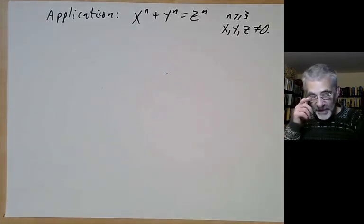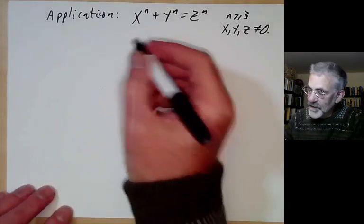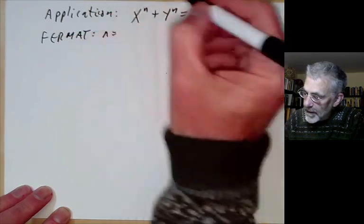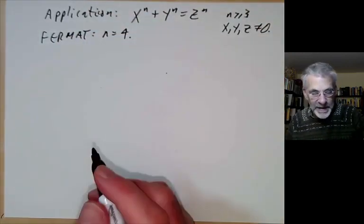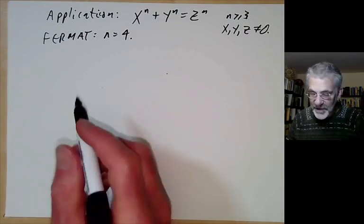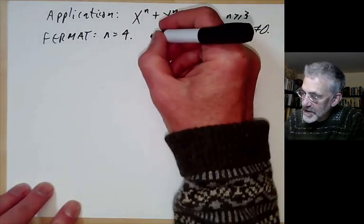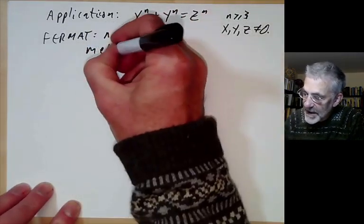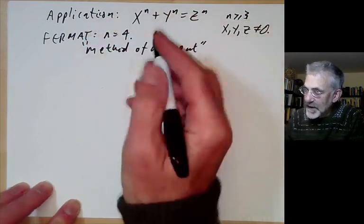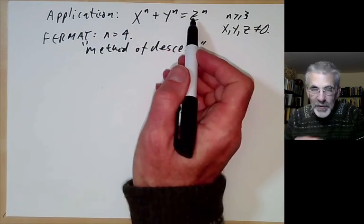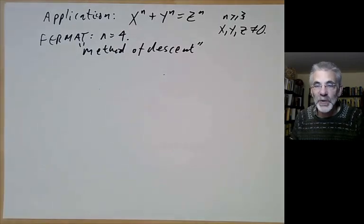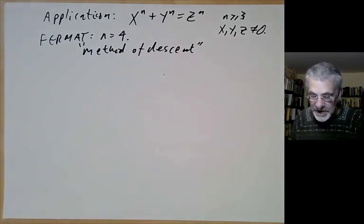Before Wiles, Fermat had already proved this for n equals 4, and also the case n equals 3. Fermat's proof for n equals 4 is the simplest example of a technique known as Fermat's method of descent. The idea is: if you can find a solution, then you can find a smaller solution, and since you can't keep finding smaller and smaller solutions indefinitely, this shows there are no non-trivial solutions.